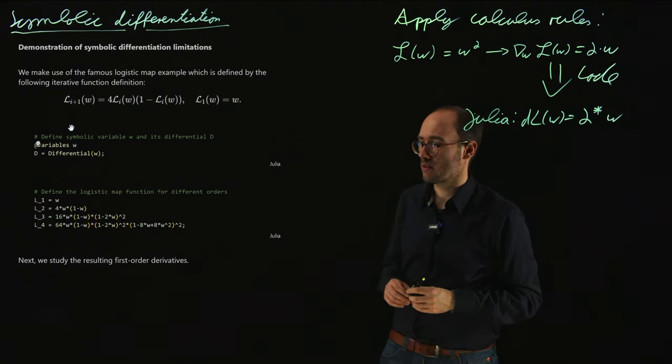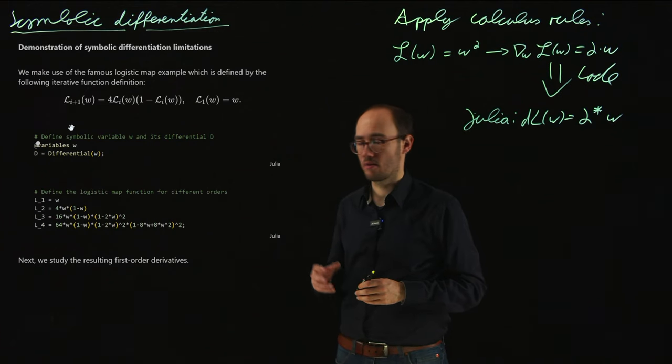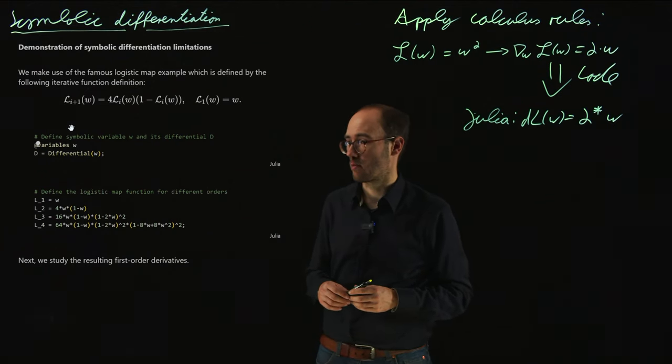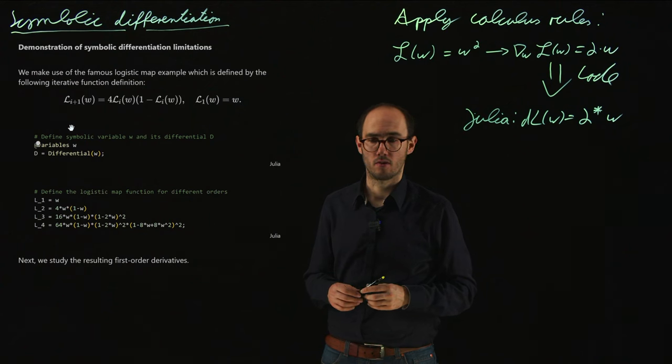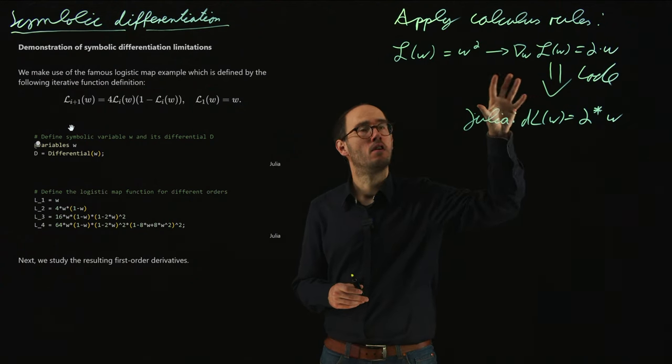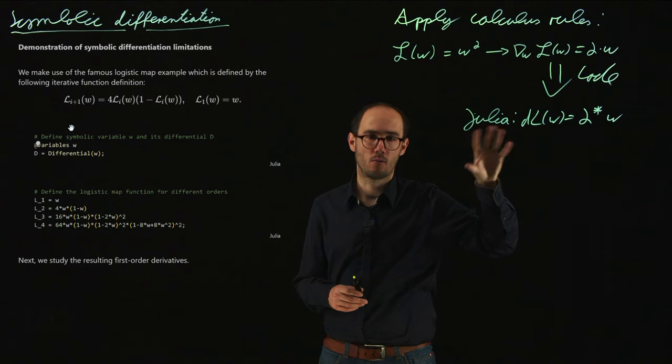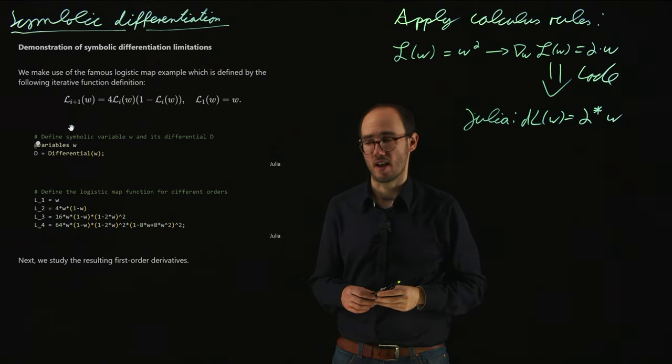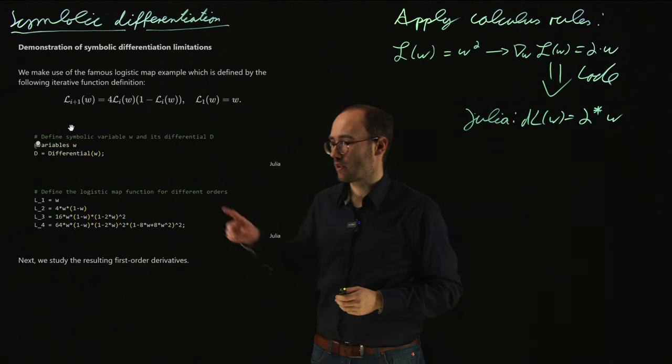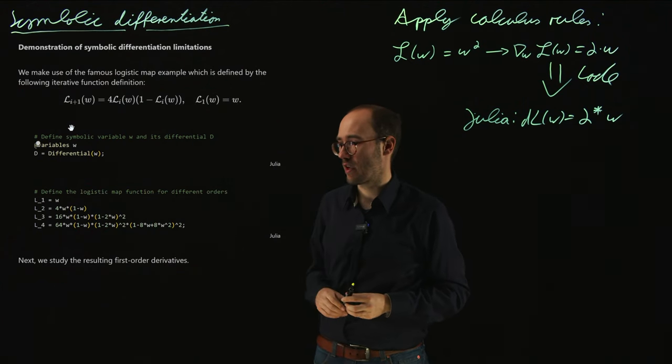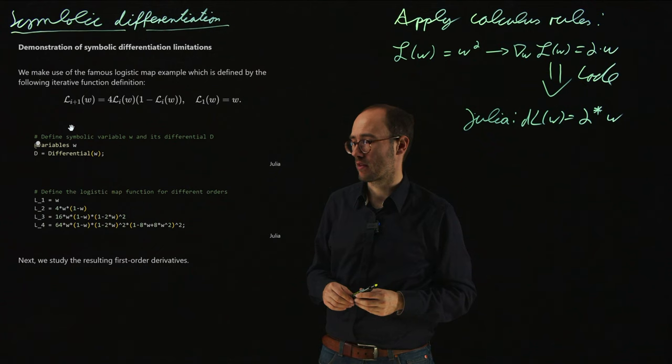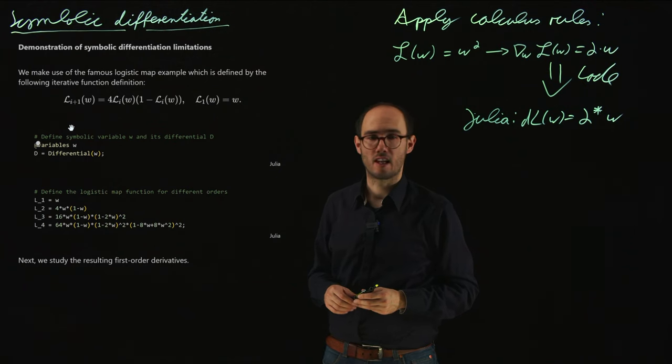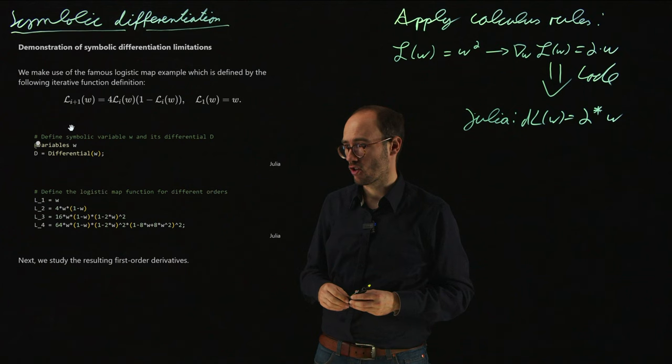And for that, we will look at a little Julia example, basically using the Symbolics.jl toolbox of Julia in order to discuss what advantages and also what potential disadvantages the symbolic differentiation has. For this, I would like to look at a famous example from the lecture books, the so-called logistic map example, which is basically a recursive equation.